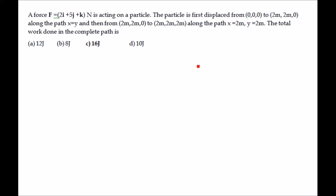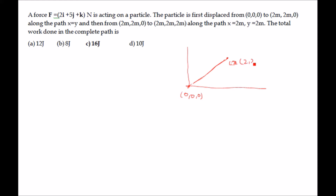We will first solve this problem using the traditional method, and afterwards using an alternate method applicable in examinations. We draw the figure: the object was initially at the origin (0,0,0) and then moves to the point (2,2,0) along the path x = y.